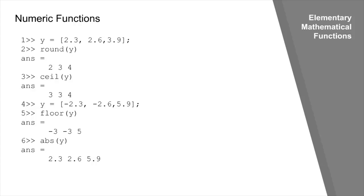Shown here are examples of numeric functions. We have a numeric array y with elements 2.3, 2.6, and 3.9. The round function rounds to the nearest integer: 2.3 rounds to 2, 2.6 rounds to 3, and 3.9 rounds to 4. The ceiling function rounds up toward positive infinity: 2.3 becomes 3, 2.6 becomes 3, and 3.9 becomes 4.